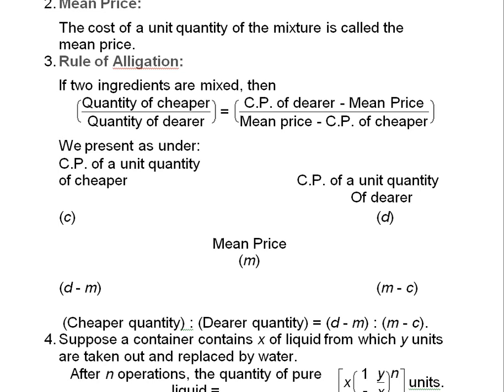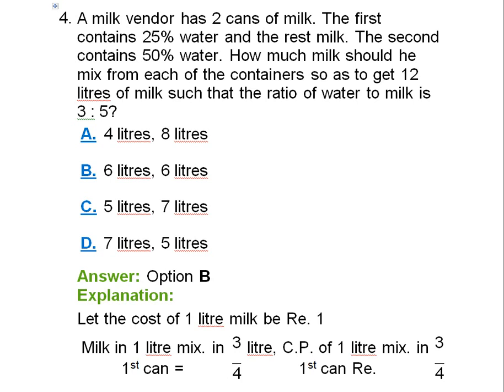Moving on to further questions. A milk vendor has two cans of milk. The first contains 25% water and the rest milk. The second contains 50% water. How much milk should he mix from each of the containers so as to get 12 liters of milk such that the ratio of water to milk is 3:5?